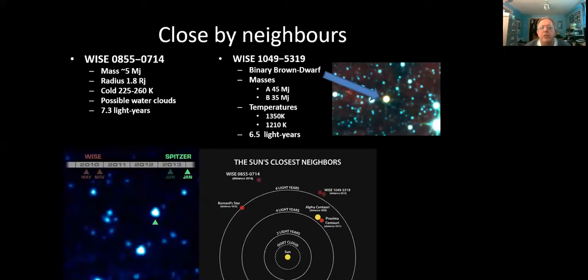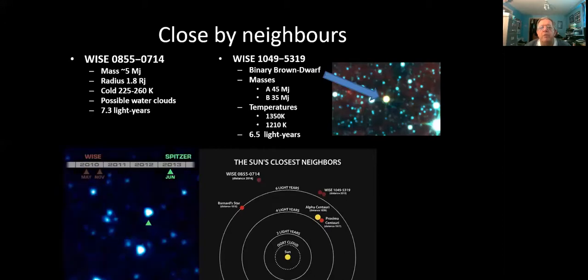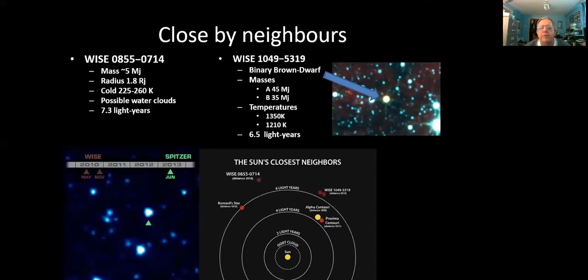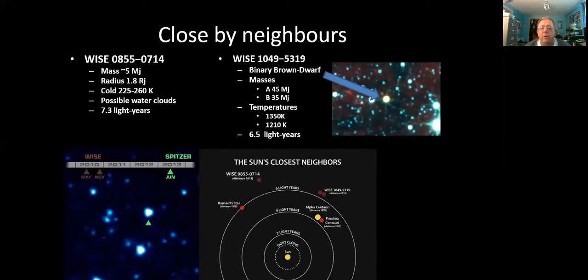And another WISE discovery is a binary brown dwarf with two fairly large objects. 35 and 45 masses of Jupiter. And that's also in our backyard. But those are definitely brown dwarfs rather than a rogue planet.